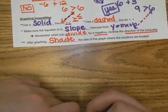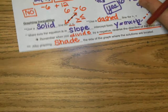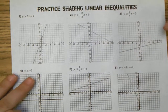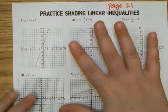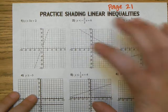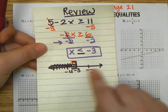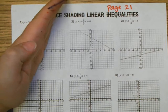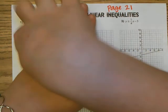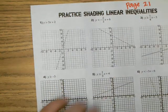After graphing, you need to shade the side of the graph where the solutions are located. Let's practice shading. On page 21 of your notes packet, graphs are already drawn. A line cuts the graph into two sides — a left and a right side, just like on a number line. When you shade, you read the problem and determine which side to shade.